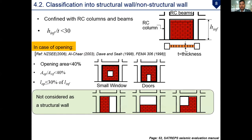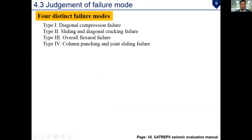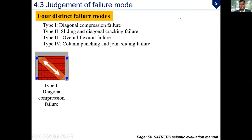Other types of openings are not considered in the manual at this time, but may be addressed in future research. Additionally, the masonry infill should be made of solid bricks — hollow blocks and hollow concrete blocks cannot be considered in this manual. Moving to Section 4.3, the identification of failure modes: four distinct failure modes were observed based on the current study, experimental research, and previous studies. The first is diagonal compression failure.